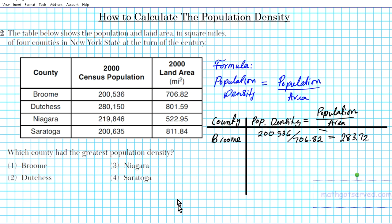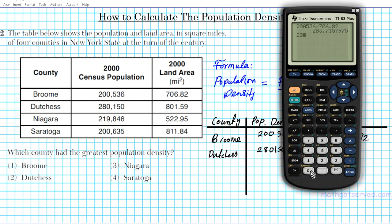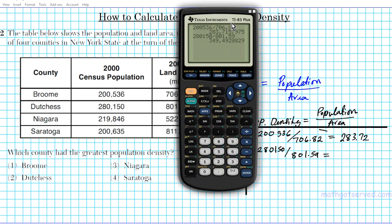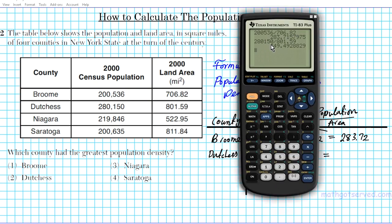Next we calculate the population density for Dutchess County. The population is 280,150, divided by the land area of 801.59 square miles. Carrying out that calculation gives us a population density of 349.49.